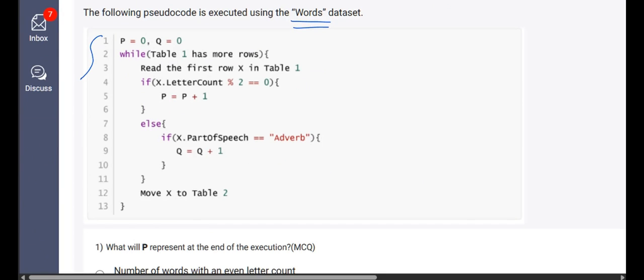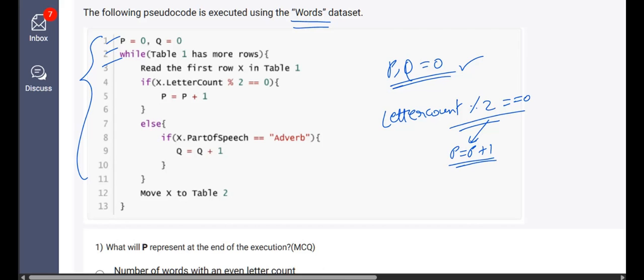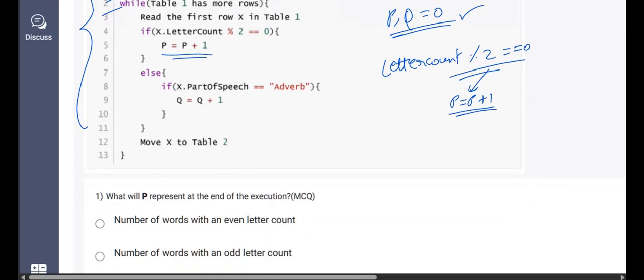Let us analyze what the pseudocode is. Here P and Q both are zeros. While table one has more rows, everything is in general. If X dot letter count, that means letter count, if it is divisible by two, then we are incrementing the value of P by one. Therefore, P is equal to P plus one. So what does P store? P stores the number of words whose letter count is perfectly divisible by two, or in other words, P stores the number of words with an even letter count.